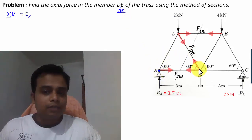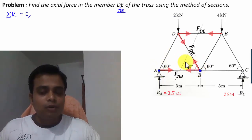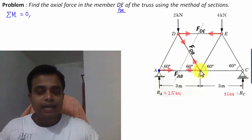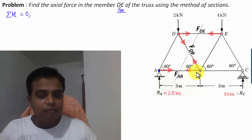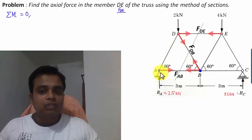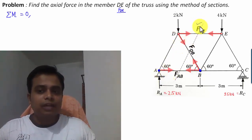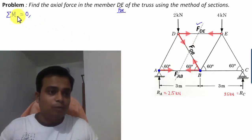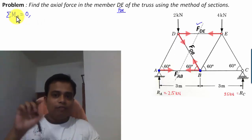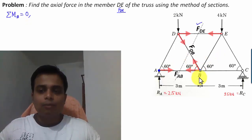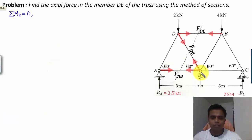Let's try point B. Since point B is to the right of the section, forces to the left are considered. Both F_AB and F_DB appear to pass through point B, so their moments are zero — they are inactive in this moment equation. The only force remaining is F_DE. This means we've hit the bullseye: taking the moment equation about point B gives one equation with only F_DE as the unknown.